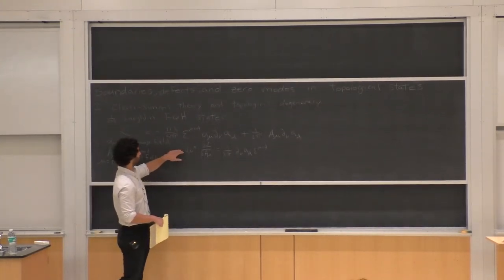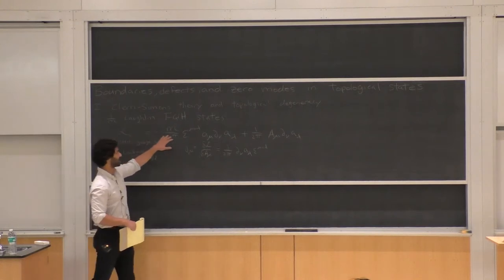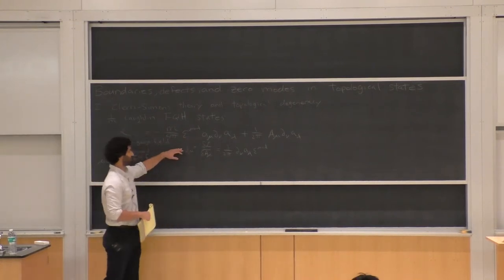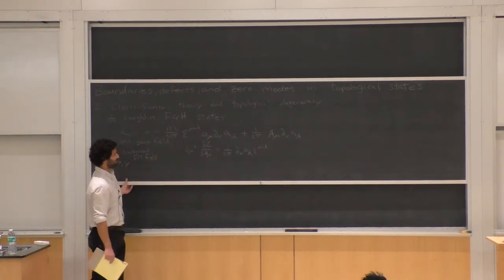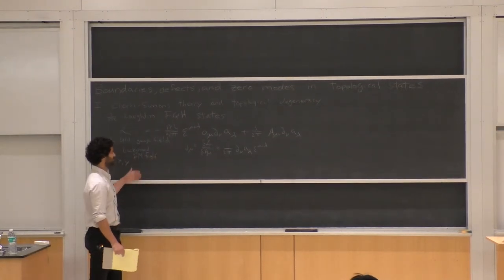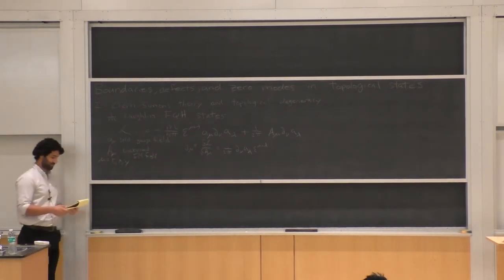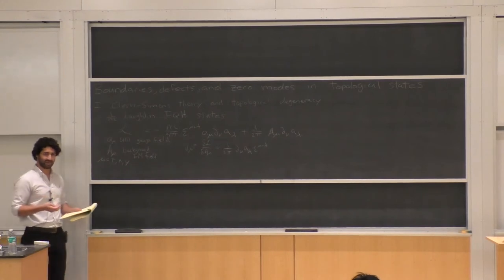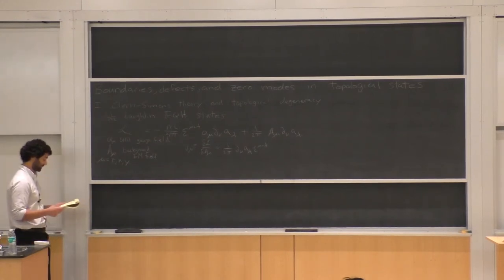Using this formula, you can pretty easily calculate from this Lagrangian that you'll get a Hall conductivity of 1/M. That will be one of the first checks that this describes some of the basic physics of the 1/M Laughlin state, namely that it has a Hall conductivity of 1/M.